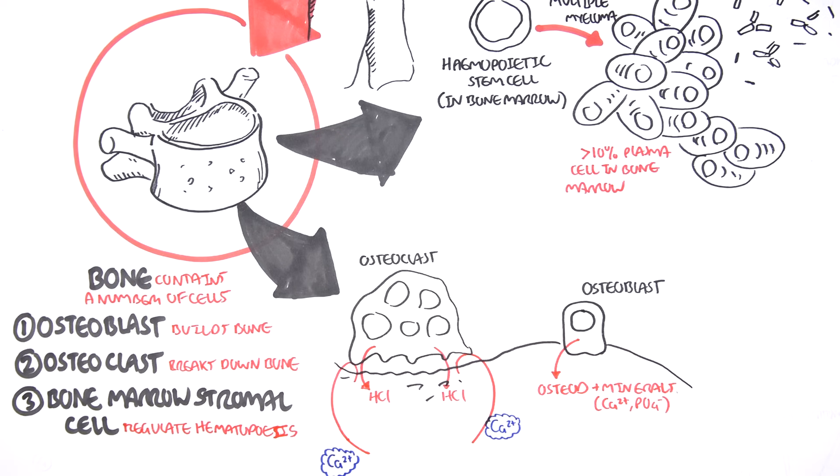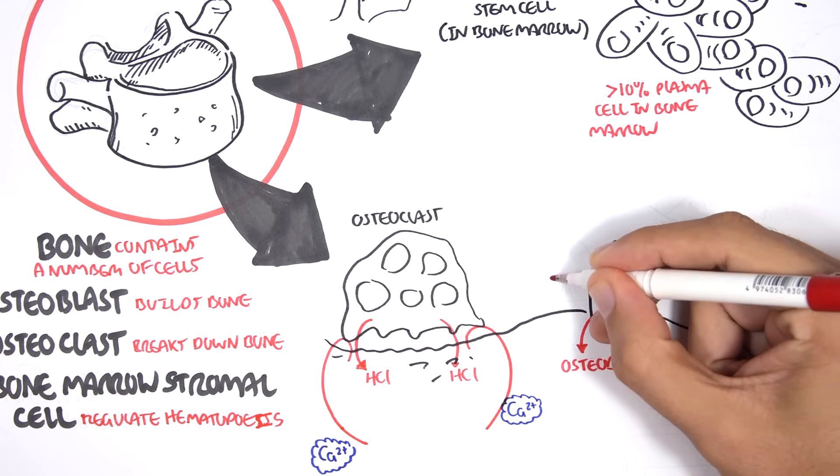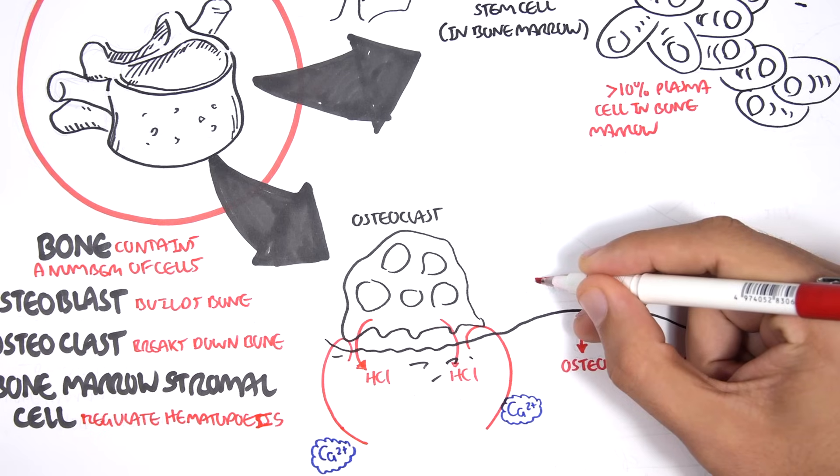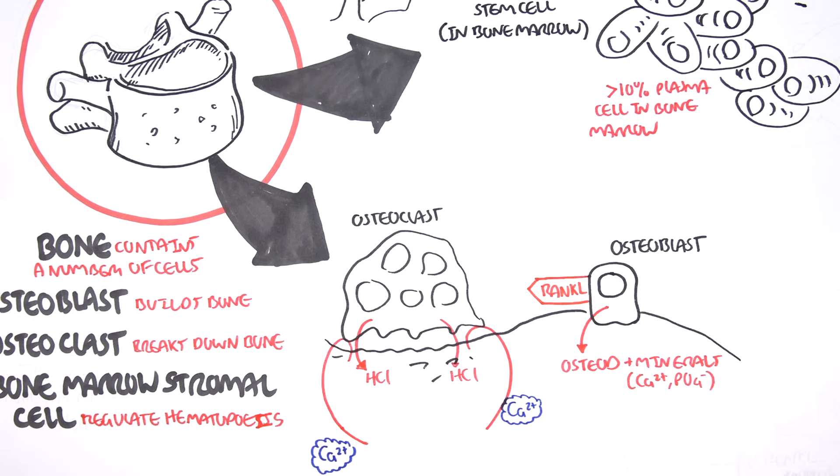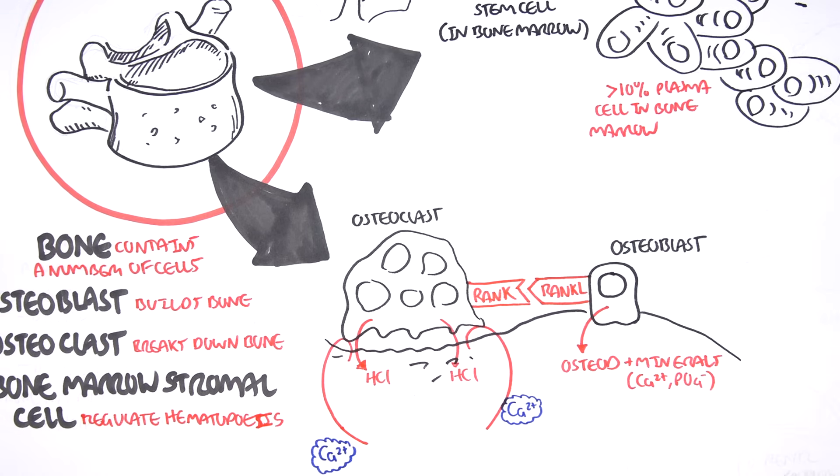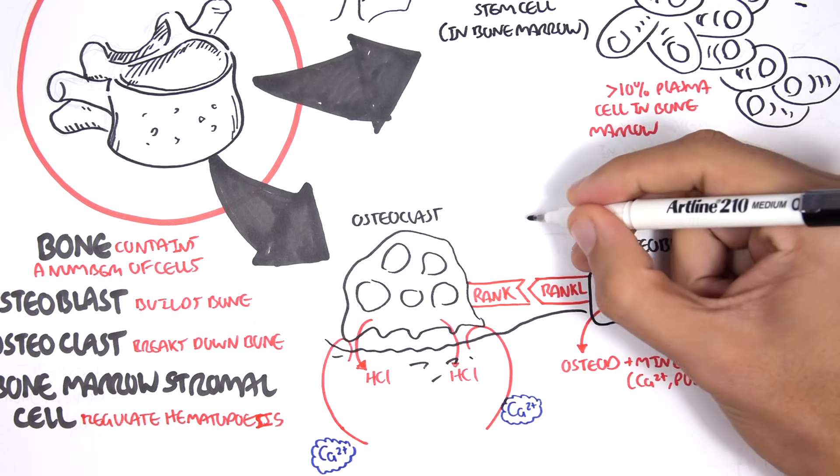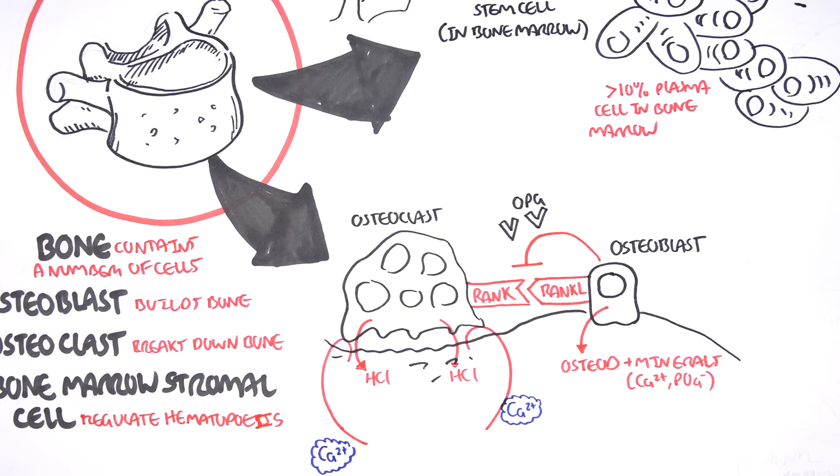The interesting thing is that osteoclast activation, so the bone breaking cells, is regulated by osteoblasts which express RANK-L. When RANK-L binds to RANK on osteoclasts, this will stimulate osteoclastic activity. But osteoblasts also secrete another molecule called OPG, which inhibit this interaction. Thus, inhibits or decreases osteoclastic activity.